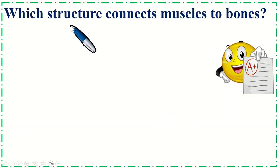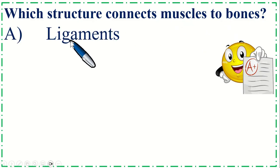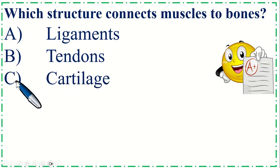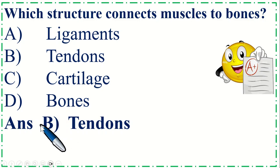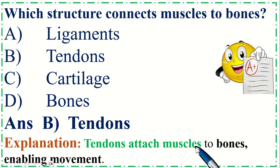Which structure connects muscle to the bone? Option A: Ligaments, B: Tendons, C: Cartilage, and Option D: Bones. The correct option is B, Tendons. Explanation: Tendons attach muscles to bones enabling movement.